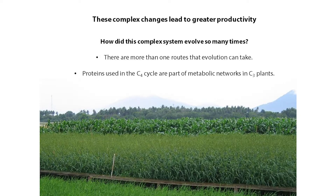On average, C4 plants grow about 50% faster than C3 plants. This is true for natural vegetation and it's also true for crops — if you grow a C3 crop and a C4 crop side by side, you'd get about a 50% faster rate of growth in the C4 crop under identical conditions. At the field level it could have a major impact, because if you were able to convert a C3 crop into a C4 plant you'd have about a 50% increase in yield.